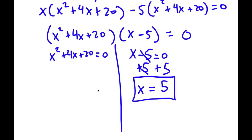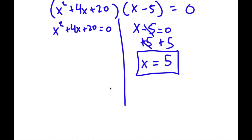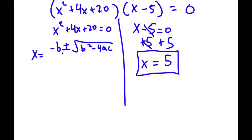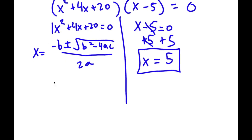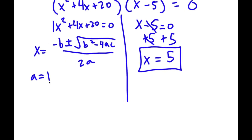Now for x squared plus 4x plus 20 equals 0, what I'm going to use is the quadratic formula. The quadratic formula, as you guys already know, is negative b plus or minus the square root of b squared minus 4ac, all over 2a. So in this case, a is equal to 1, b is equal to 4, and c is equal to 20, because the coefficients in front of these terms are 1, 4, and 20.